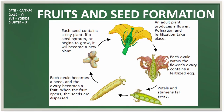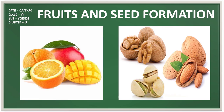In fruit and seed formation, an adult plant produces a flower, pollination and fertilization take place, and each ovule within the flower's ovary contains a fertilized egg that keeps growing, forming the fruit as the ripened ovary develops while petals and stamens fall away. Each ovule becomes a seed and the ovary becomes the fruit. When the fruit ripens, seeds are dispersed. Each seed contains a tiny plant, and if a seed sprouts it will become a new plant. Some fruits are fleshy like mango, apple, and orange; others are hard like almond and walnuts.